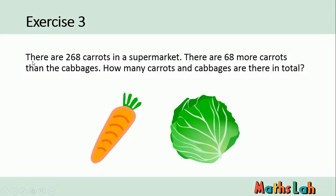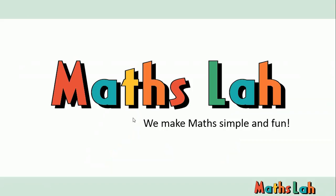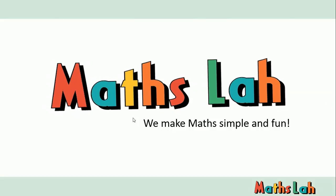This is the last exercise for today. There are 269 carrots in the supermarket and there are 68 more carrots than cabbage. How many carrots and cabbage are there in total? Just like the previous exercises, draw the diagram to see the relationship more clearly. That's the end of today — we make math simple and fun.